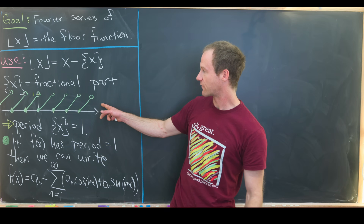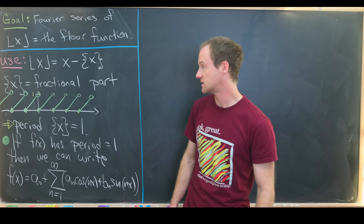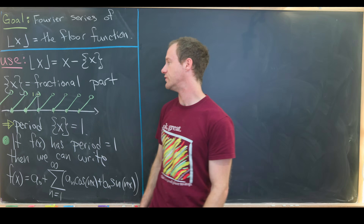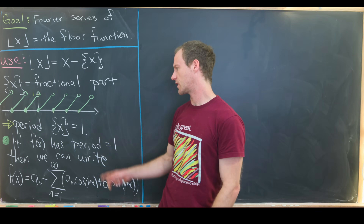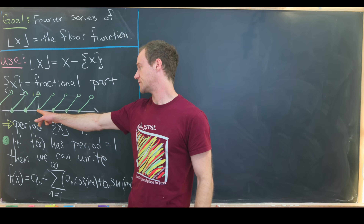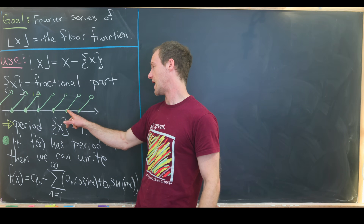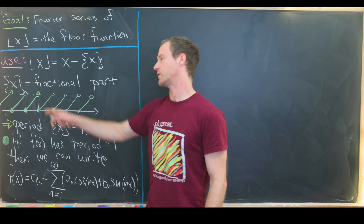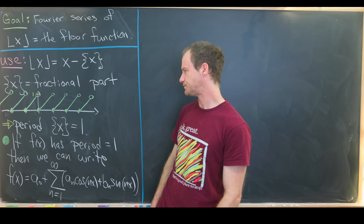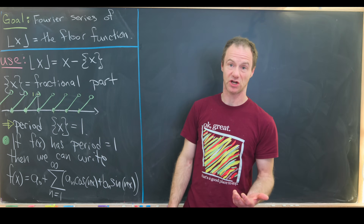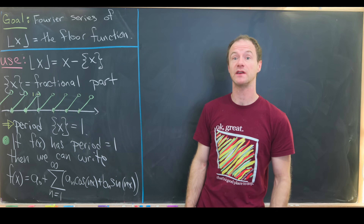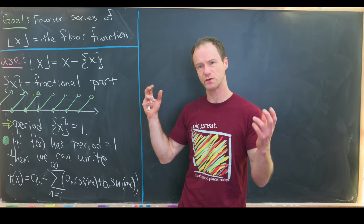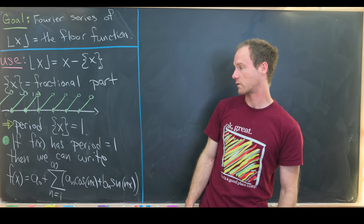We can graph the fractional part easily. It looks like a linear function starting at the x-axis and going to one unit above, but it's periodic with period one. Between zero and one, between one and two, and so on — for example, 1.5 maps to 0.5. This is also known as a sawtooth wave, and it is most definitely periodic. So we can make a Fourier series of this periodic function and use that to find something like the Fourier series of our floor function.